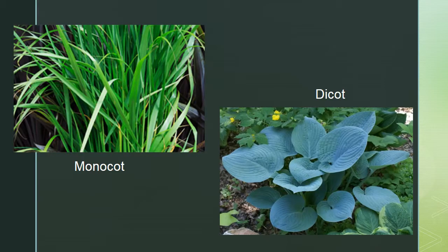This difference makes sense: most monocots are grasses with upright leaves that receive equal sunlight on either side, so they need stomata on both surfaces. Eudicots tend to grow horizontally with the top surface receiving most sunlight, so stomata are mostly on the underside to prevent desiccation from losing too much water.